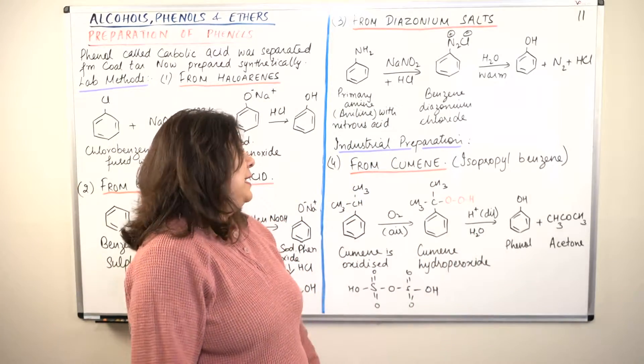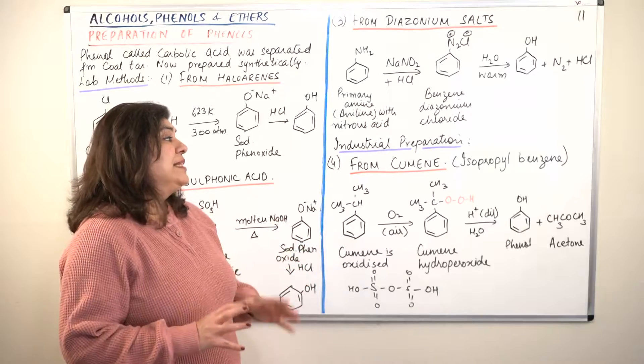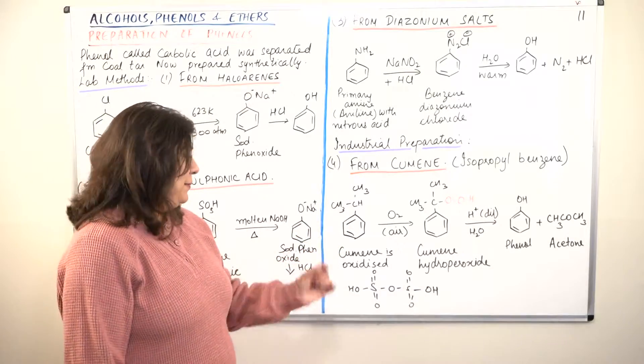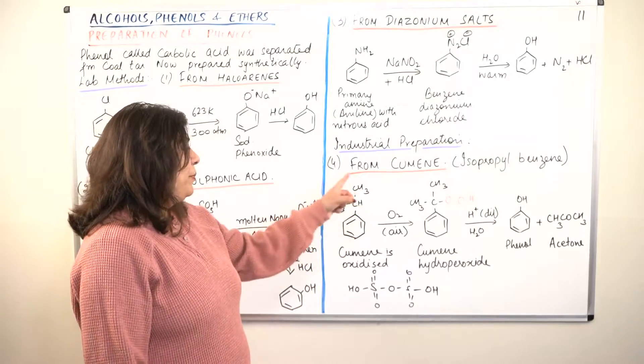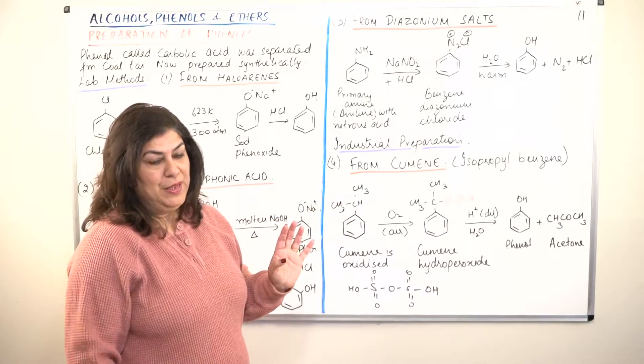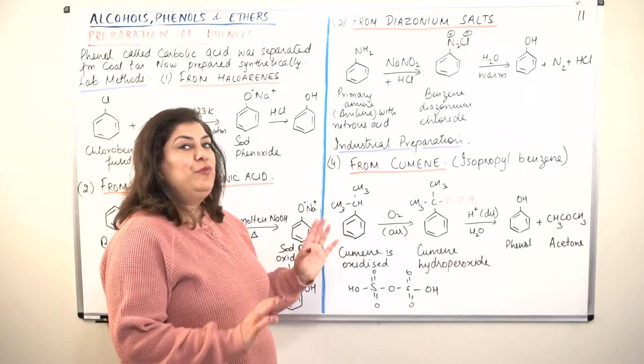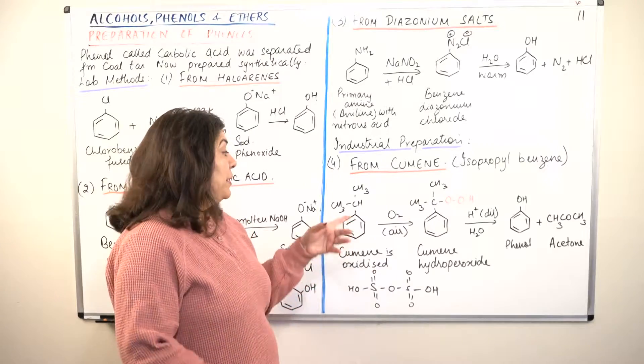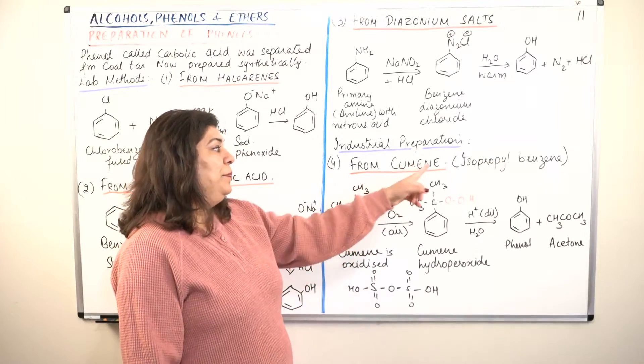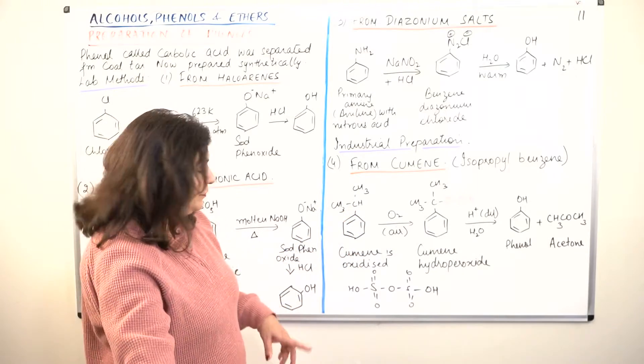The industrial preparation - this is the last method of preparation. Industrially, phenols are prepared from cumene. Cumene is isopropyl benzene. Isopropyl means the propyl group in which the second carbon is attached to the benzene ring. If it was the first carbon, it would have been a normal propyl group. But since the second carbon is attached, it is called an isopropyl group. So what is cumene? Cumene is the common name - it is isopropyl benzene. So isopropyl benzene is cumene.